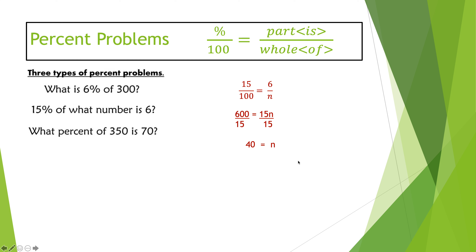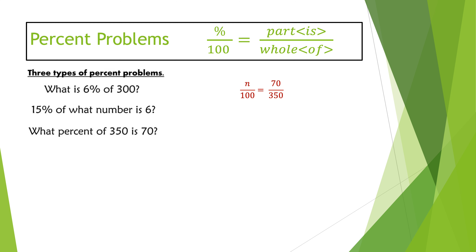So 15% of 40 is equal to six. Now let's try the last one: what percent of 350 is 70? Where does the variable go — in the 'of' place, the 'is' place, or the percent place? It definitely goes in the percent place because it says 'what percent.' So n over 100 equals 70 over 350. Cross multiplying gives 350n equals 7000. Dividing by 350 gives n equals 20.